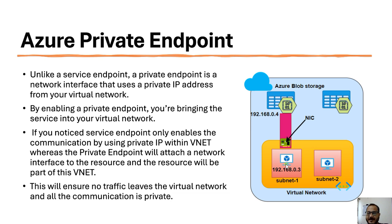When we create a private endpoint to connect from this virtual machine to the storage account, we also create a network interface card - you can see this green element in the diagram is a network interface card. This means we are bringing the storage account service into our virtual network. From the virtual network IP address range, specifically from the subnet range, we will get an IP like 192.168.0.3, and from that subnet range, an IP address will also be assigned to the storage account - for example 192.168.0.4. So we are allocating private IP addresses to this storage account.